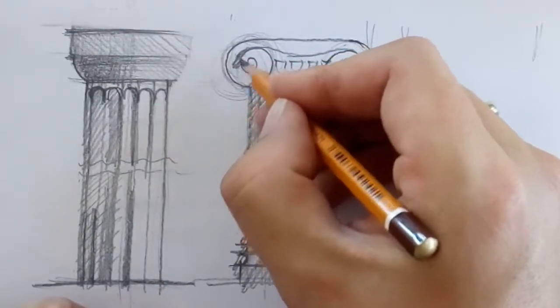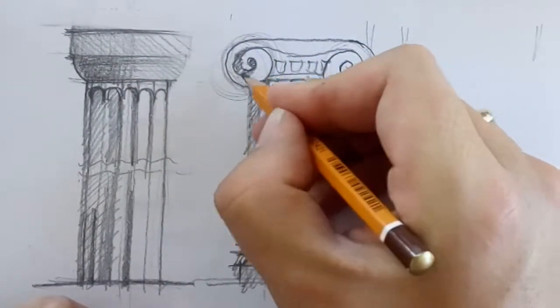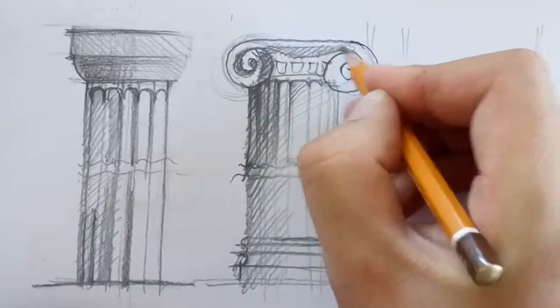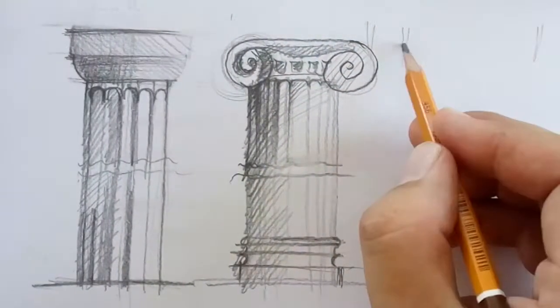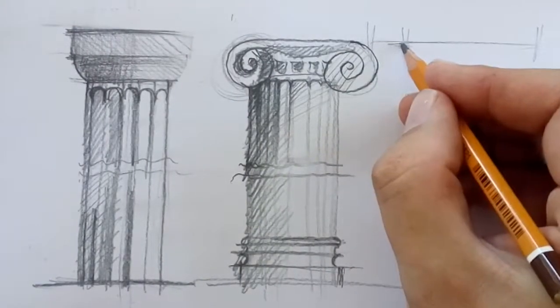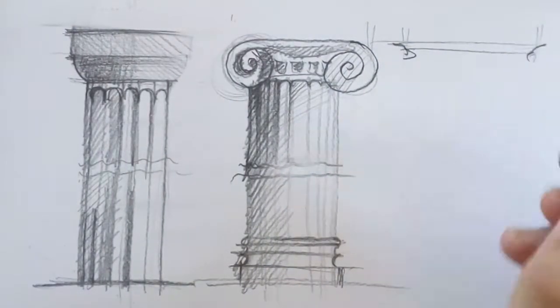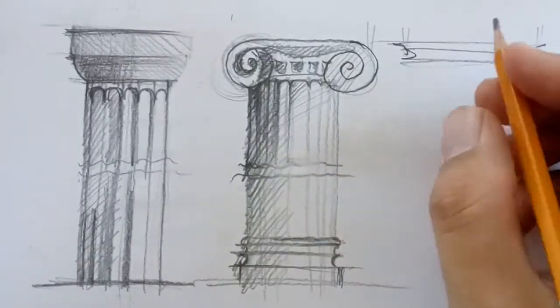On the top of these three columns is a square-shaped stone. It is the Abacus. The Abacus holds the architrave with the frieze.